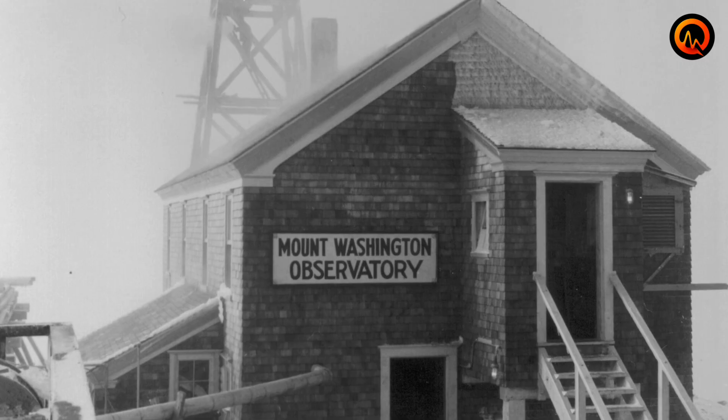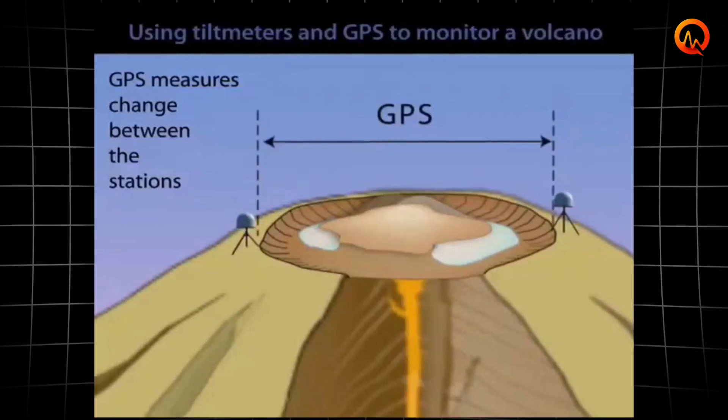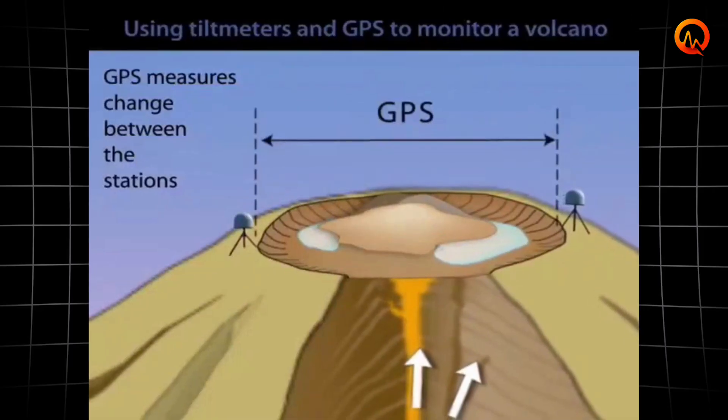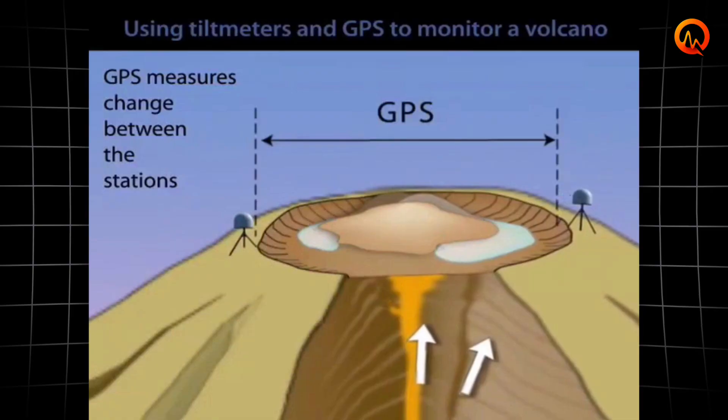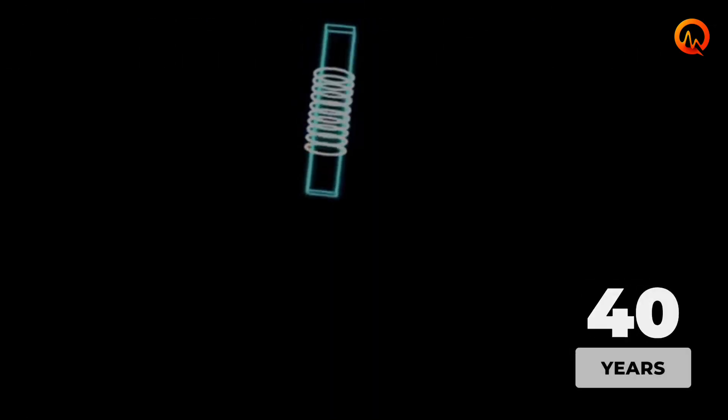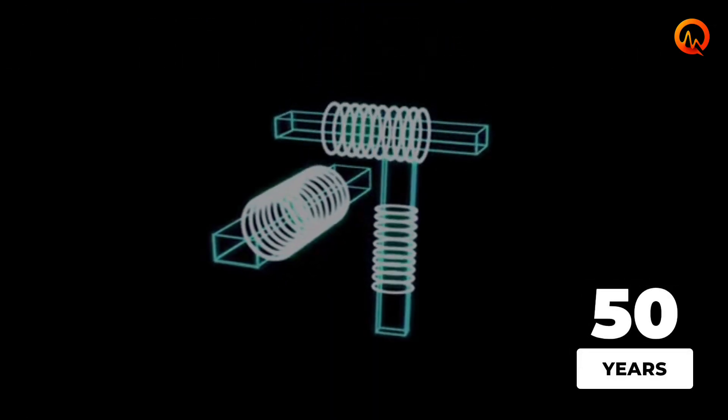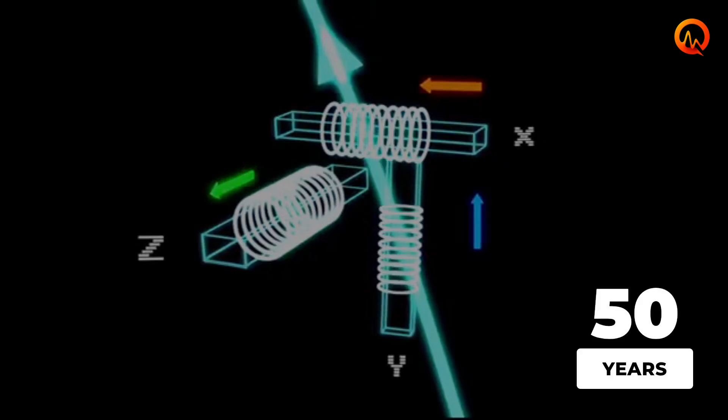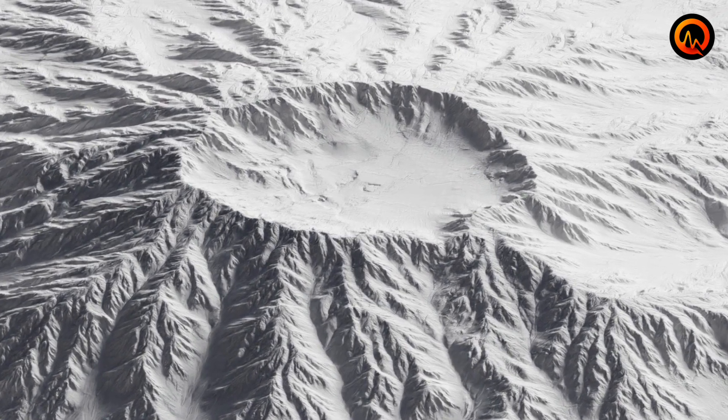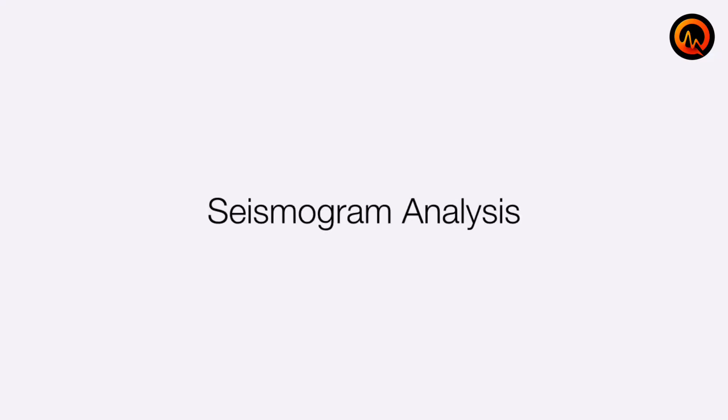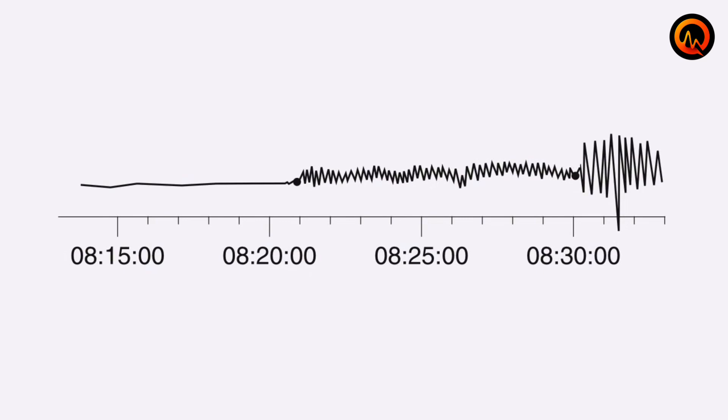Current research limitations include the relatively short period of detailed electromagnetic monitoring compared to geological time scales. Comprehensive geomagnetic measurements have only existed for about 50 years. This is a brief moment in volcanic terms. This limited record makes it difficult to establish definitive causal relationships.